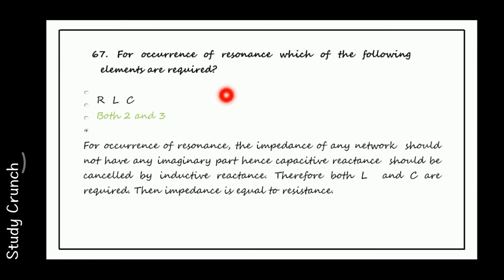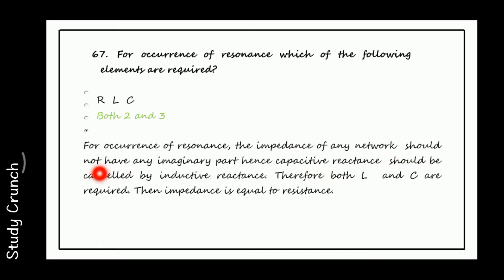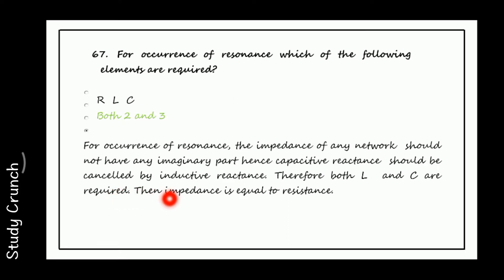Next, for the occurrence of resonance, which elements are required? We require inductance and capacitance. The impedance of any network should not have any imaginary part; hence capacitive reactance should be cancelled by inductive reactance. Therefore both L and C are required, and the impedance equals resistance.